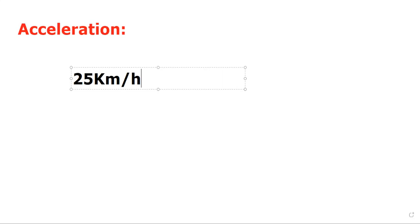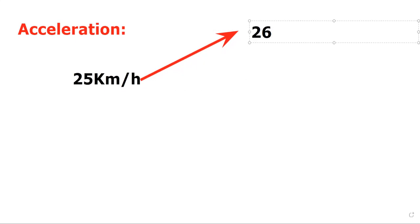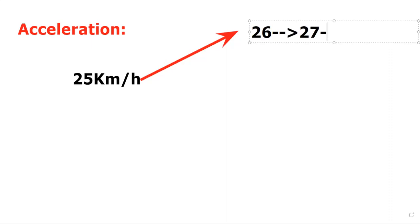Suppose the velocity of the car is 25 km per hour. Now suppose the driver accelerates the car and it increases to 26 km per hour, 27 km per hour, 28 km per hour — it is increasing like this.